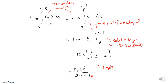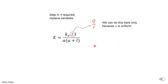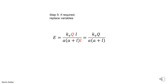As a last step, if required, you can substitute for λ. Remember, λ equals Q over l only for a uniform charge distribution. In this problem we have a uniform charge distribution, so we substitute λ = Q/l. The l cancels, and you get the final result for the electric field in terms of the total charge Q on the rod.